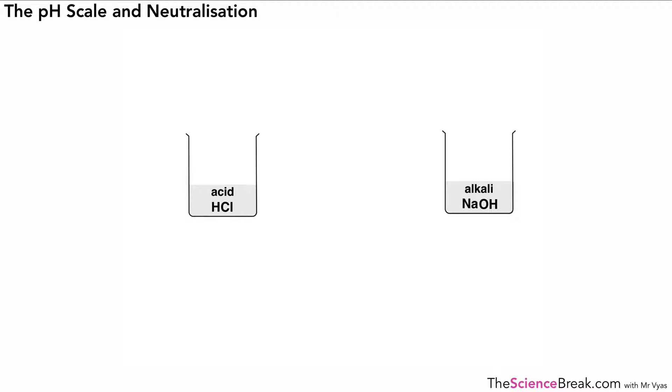By looking at them we can't tell much other than what I've labeled them as. But what we can do is use something called universal indicator. This is a chemical that changes color depending on whether it meets acid or alkali. If we add some universal indicator to our acid we get a color change, and we can add the very same universal indicator to our alkali and also get a color change.